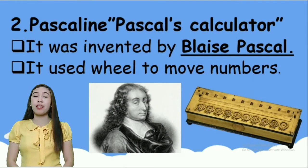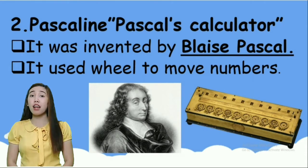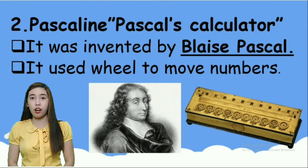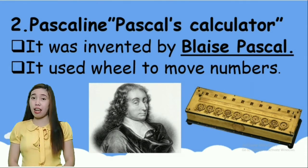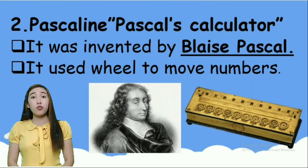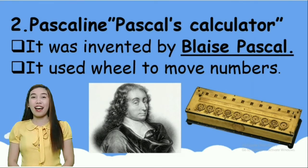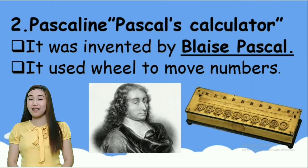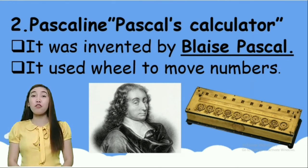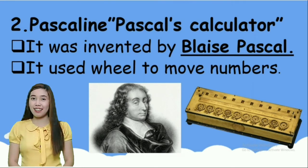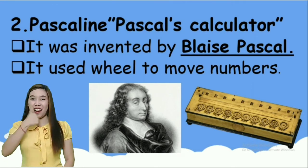Number two is pascaline, or Pascal's calculator. It was invented by Blaise Pascal, and it used wheels to move numbers. Again, what is this? Correct! Everybody say, pascaline. That's right!